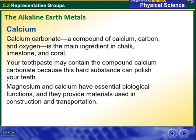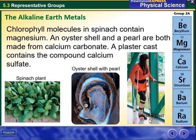Calcium carbonate, a compound of calcium, carbon, and oxygen, is the main ingredient in chalk, limestone, and coral. Toothpaste may also contain calcium carbonate because this hard substance can polish your teeth. The alkaline earth metals are beryllium, magnesium, calcium, strontium, barium, and radium. Chlorophyll molecules in spinach contain magnesium. An oyster shell and a pearl are both made of calcium carbonate, and a plaster cast contains a compound of calcium sulfate.